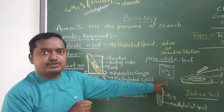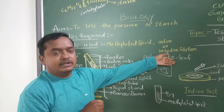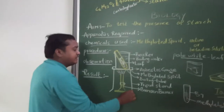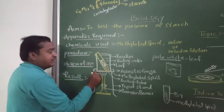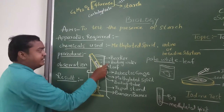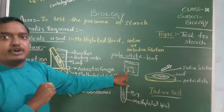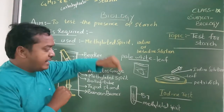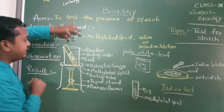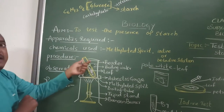The main work of methylated spirit is to turn the leaf into a pale white color. To summarize the steps: set up a tripod stand with a Bunsen burner, place the asbestos sheet, put the beaker with water on it, add the leaf and let it become soft. Then take the leaf out, place it in methylated spirit in the boiling tube, and keep the boiling tube again in the boiling beaker. After a few minutes, the leaf becomes pale white in color.